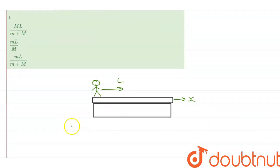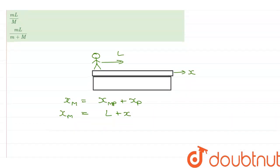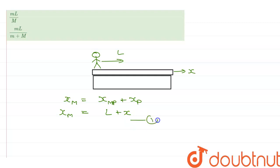So now, the displacement of the man with respect to the ground will be equal to his displacement with respect to the plank plus the displacement of the plank. That is L plus x. Let's mark it as equation number 1.